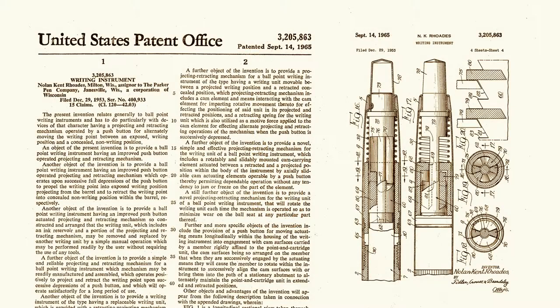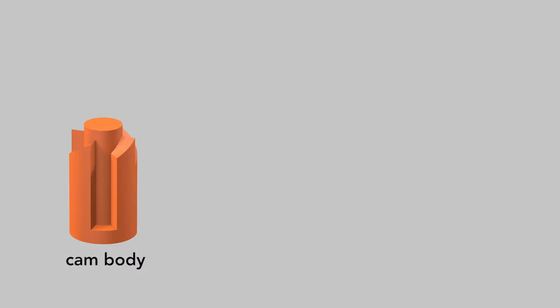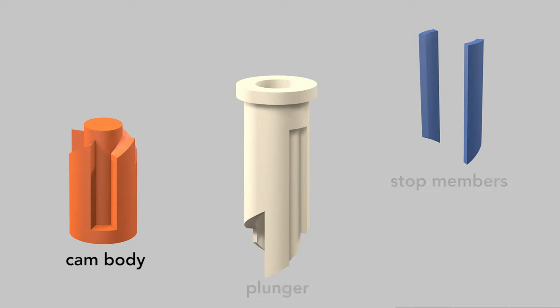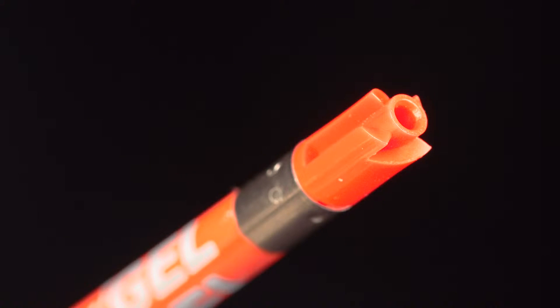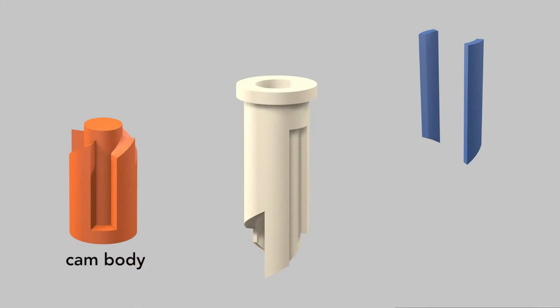A Parker Pen Company patent describes the three parts that produce the pen's click. The cam body, the tubular plunger, and the stop members. The cam body is affixed to the top of the replaceable ink cartridge. During operation, this cam body rotates and slides up and down.